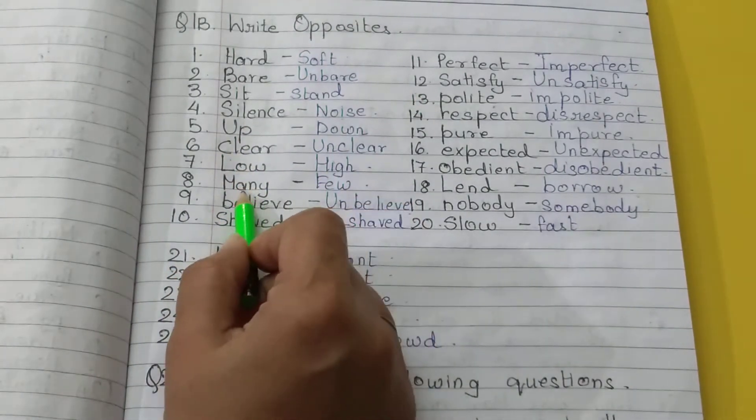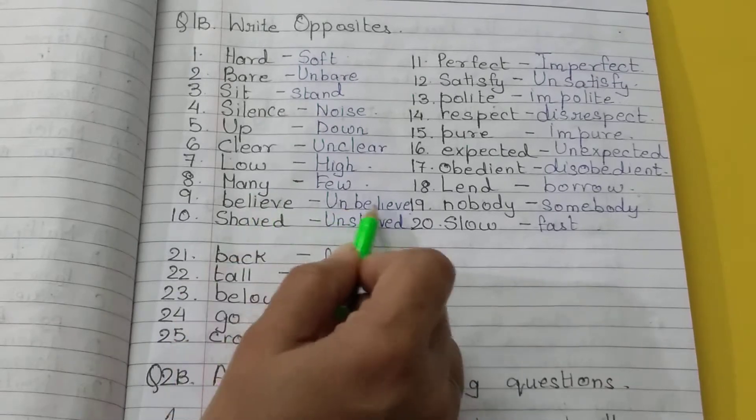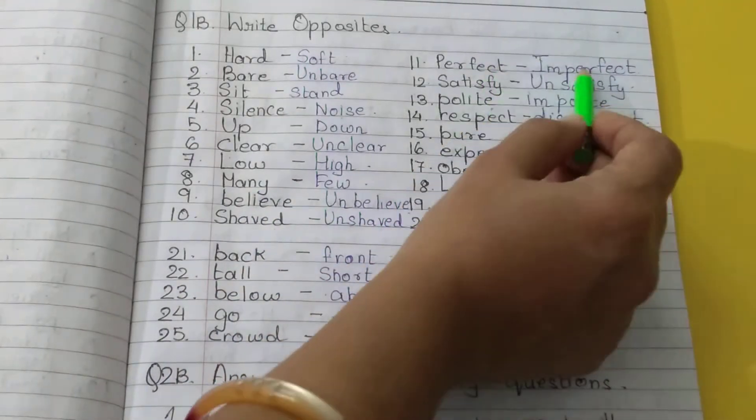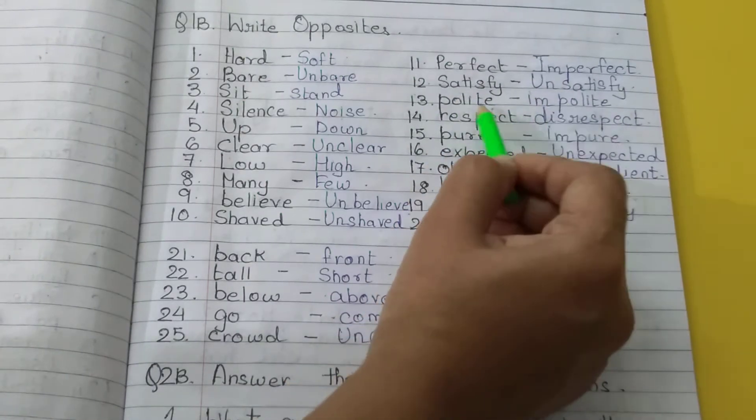Low, high. Many, few. Believe, unbelieve. Shaved, unshaved. Perfect, imperfect. Satisfied, unsatisfied.